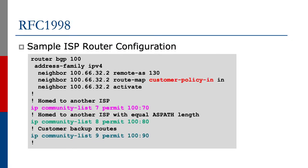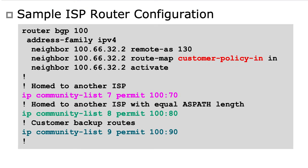On the ISP side, looking at router BGP 100, this is a router in AS 100 with a neighbour in remote AS 130. They have the route map customer-policy-in in the inbound direction. Notably, this customer policy does not have to be unique for each customer — you can apply the same route map to many different customers. Inside the community list, IP community list 7 permits 100:70, community list 8 permits 100:80 for routes to another ISP at the same path length, and community list 9 permits 100:90 for backup routes.